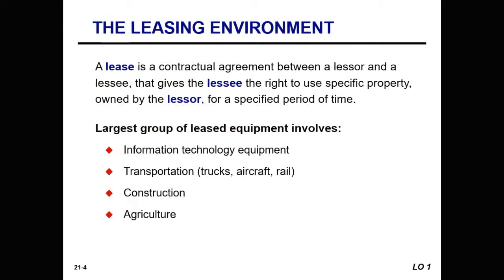Many businesses lease substantial portions of the property and equipment they use in their business organizations as an alternative to ownership. Because leasing provides some financial, operating, and risk advantages over ownership, it has become the fastest growing form of capital investment. This increased significance of lease arrangements has intensified the need for uniform accounting and complete informative reporting of leasing transactions. This chapter presents a discussion on the accounting issues related to leasing arrangements from the point of view of both the lessee and the lessor.